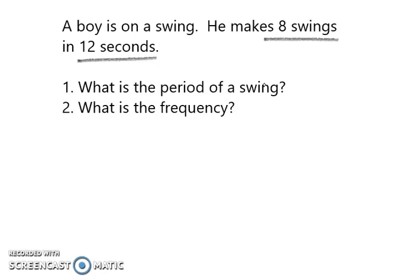So these two pieces of information are going to be important when we solve for the period of a swing. Now the period is the time it takes per one swing. Well, the boy makes eight swings in 12 seconds. So if it's the time for one swing, the period will be the total amount of time, which is 12 seconds, divided by your eight swings.